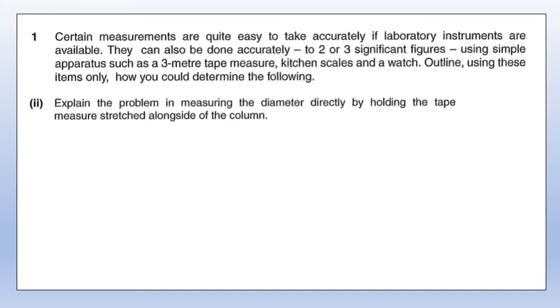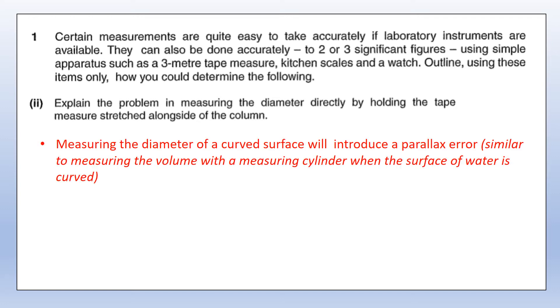We need to explain why we don't just measure the diameter directly, holding the tape up alongside the column. Measuring curved surfaces is incredibly difficult and you're very likely to introduce a parallax type error. It's the same kind of error that you get when you're trying to measure volume with a measuring cylinder when the water is curved at the top, called the meniscus.